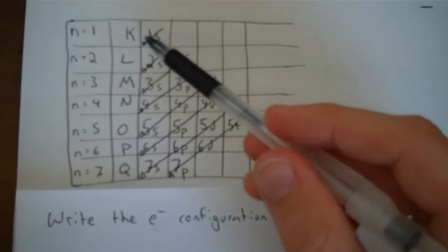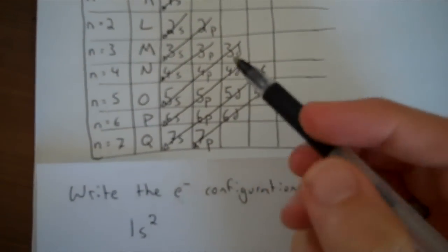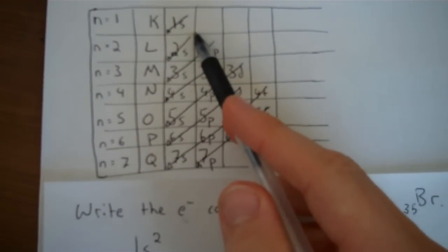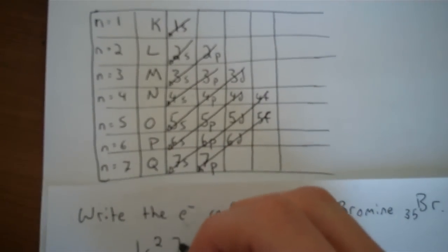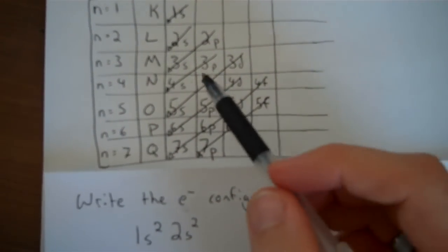So I'll start with 1S. I know S subshell holds two electrons, so I'll put the first two there. Follow my line, I need to go to the second one, then I'll fill 2S, again putting 2 in that S subshell.